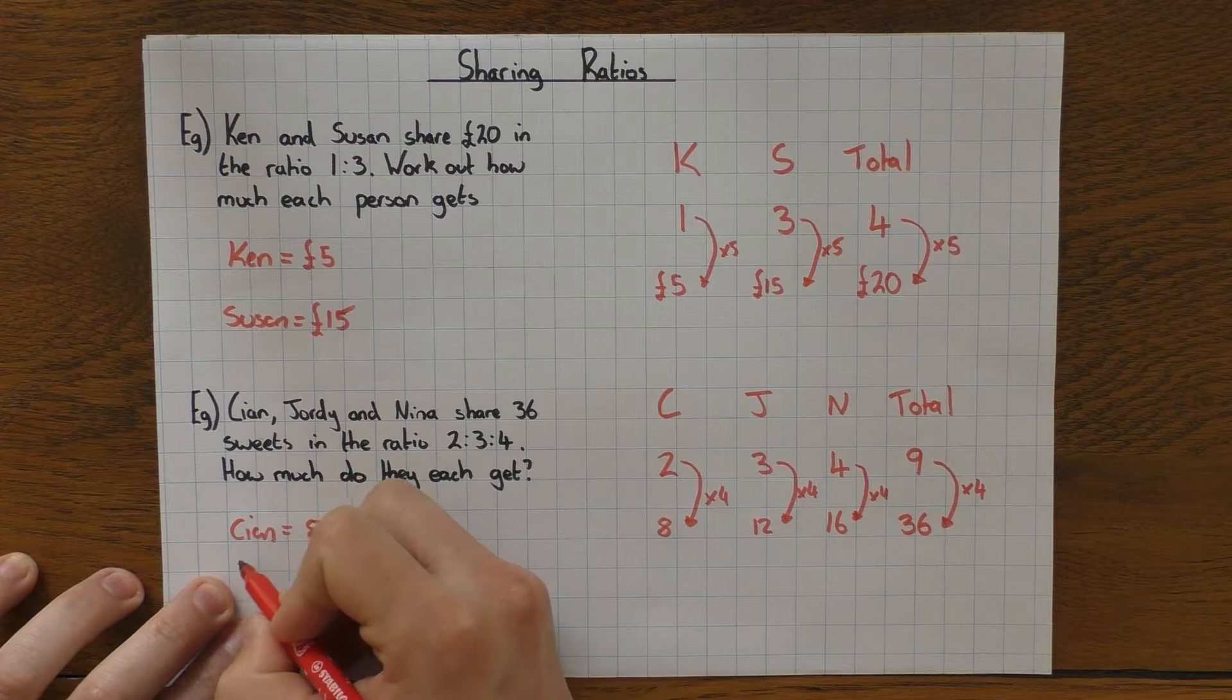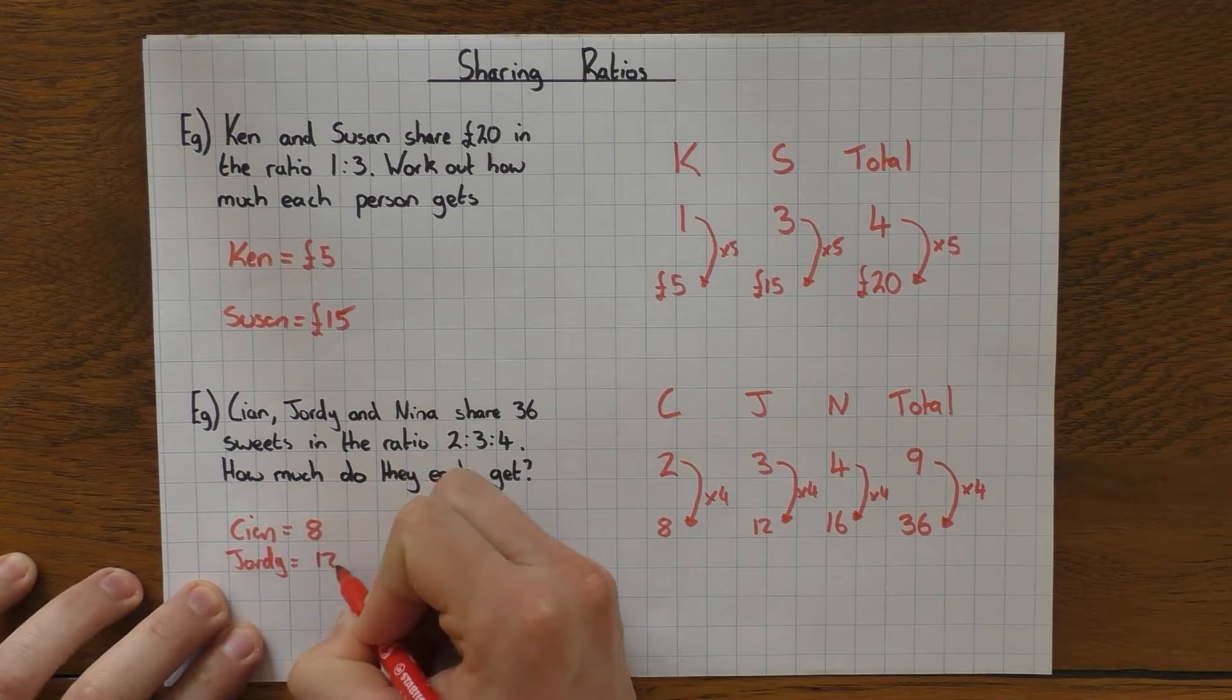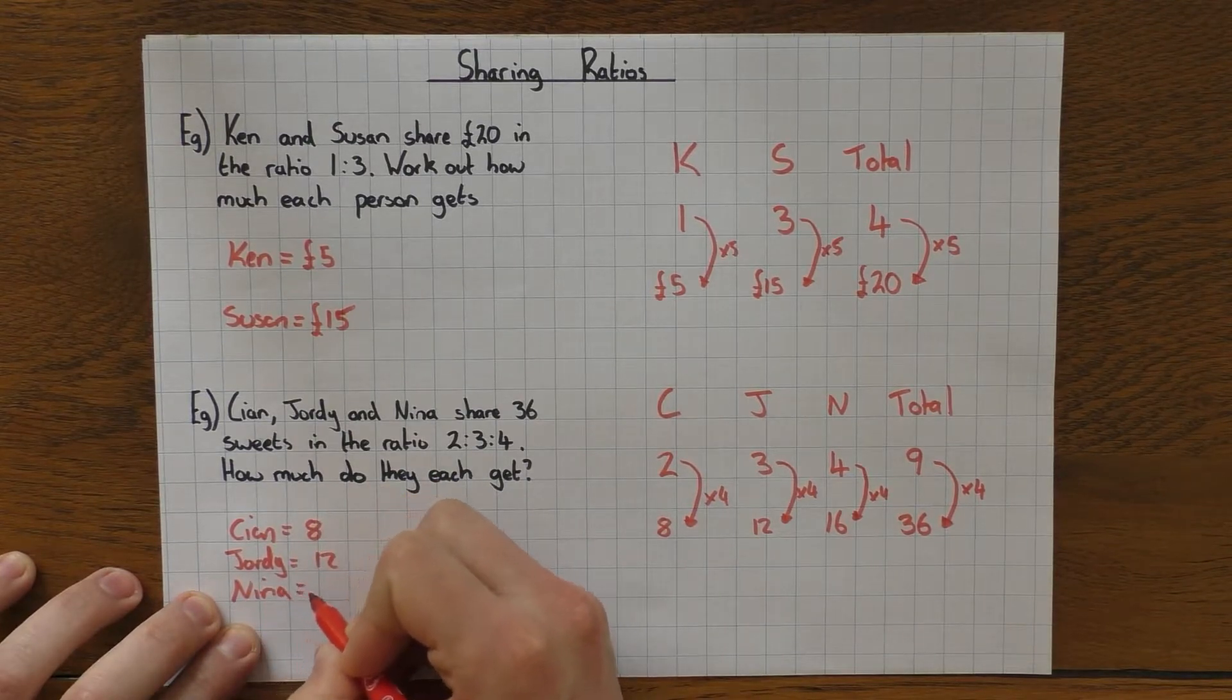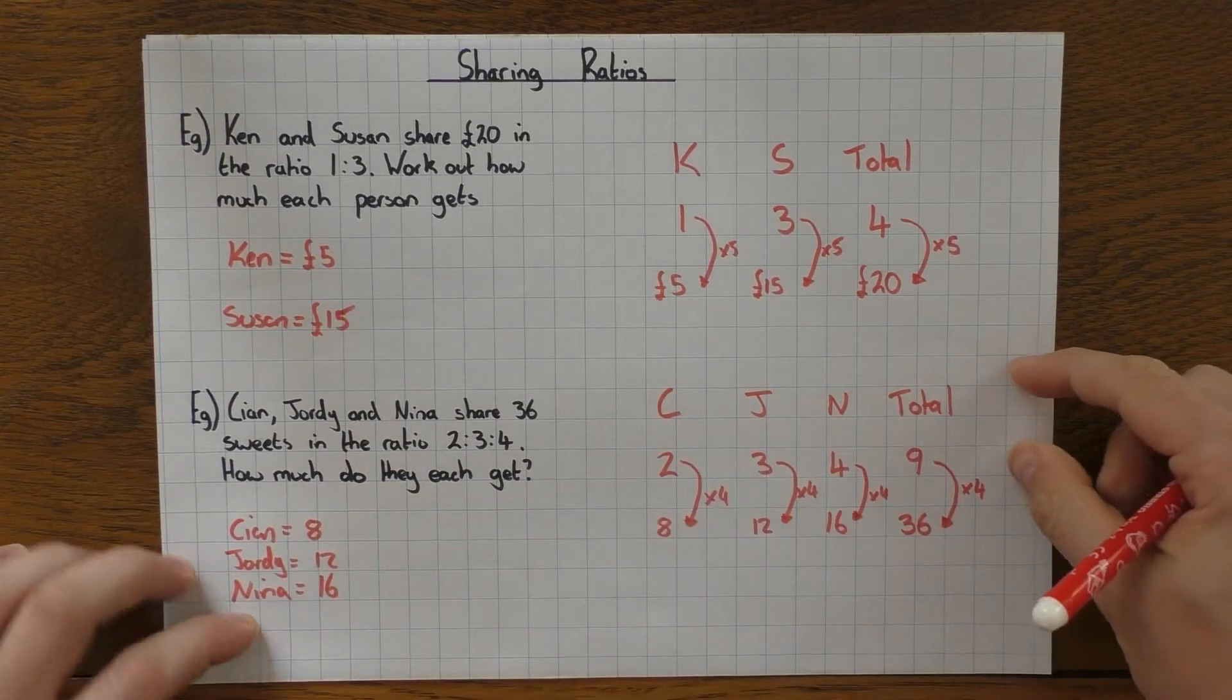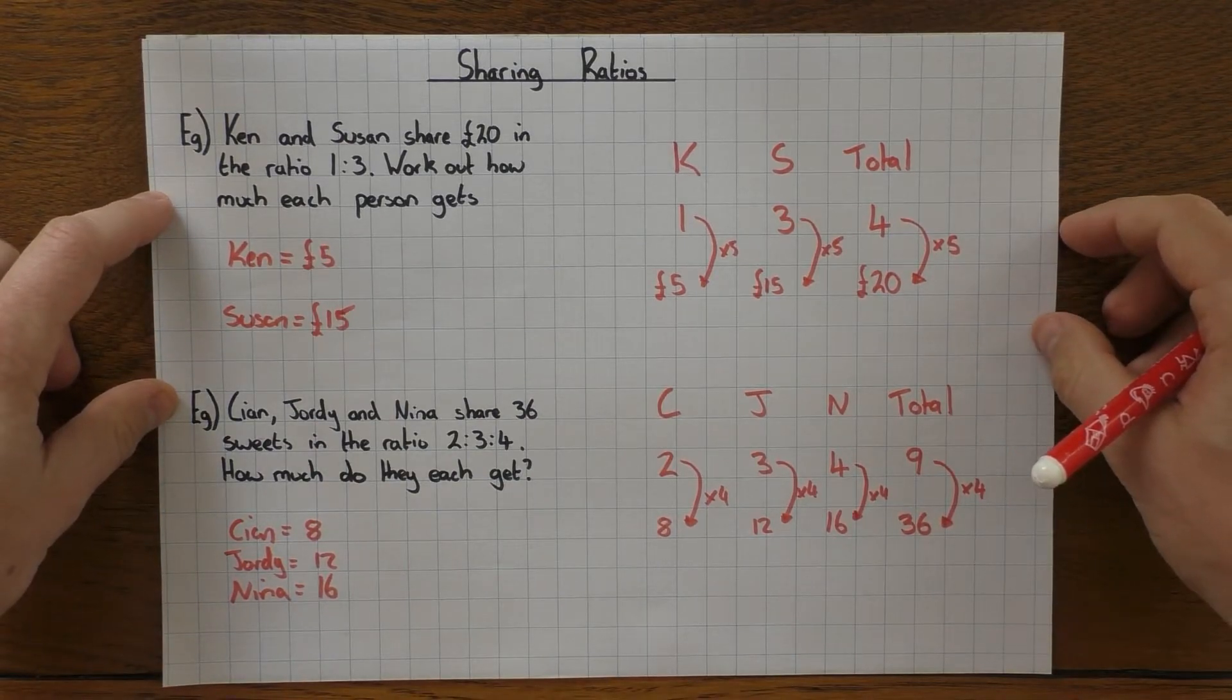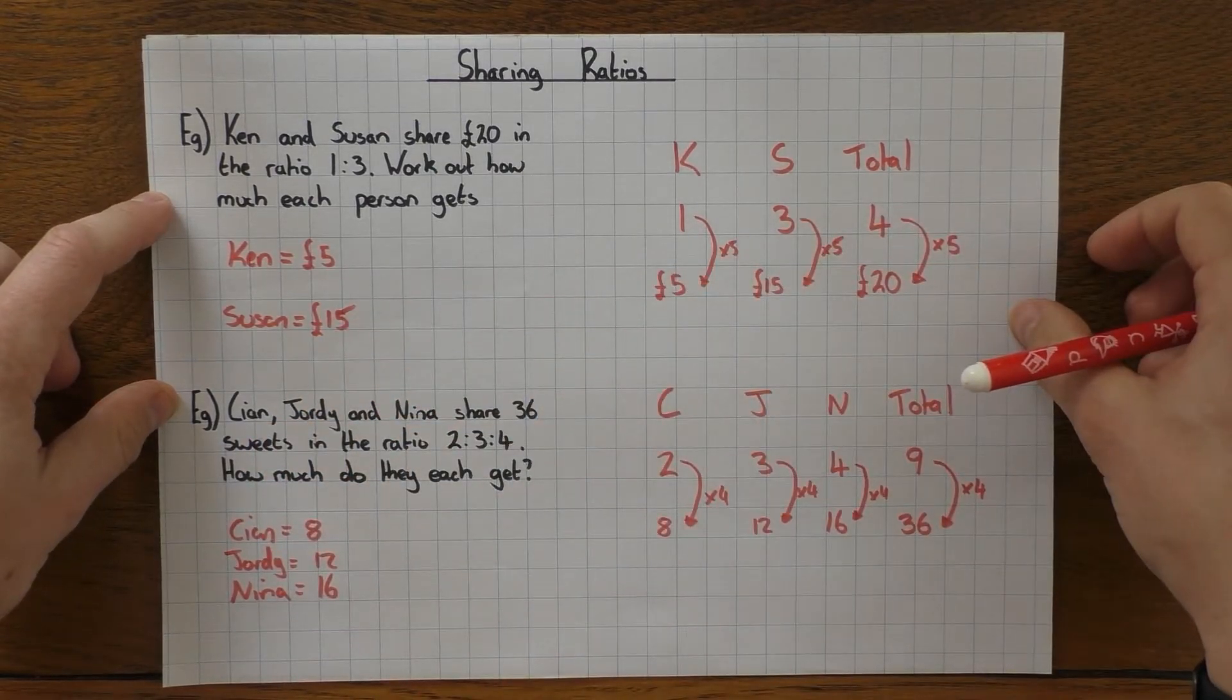It says how much do they each get, so again I'm gonna make my answer really clear. So Kian will get 8 sweets, Geordie will get 12, and Nina gets the 16. So by putting it into a table, it makes it all nice and clear, really easy to spot what's going on, nice easy working, nice clear answer. So there's some of the basic ones—let's have a look at something slightly trickier.